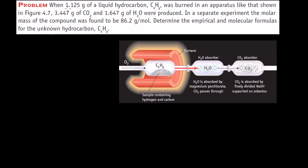Our problem tells us that when 1.125 grams of a liquid hydrocarbon, CxHy — we don't know how many C's and H's there are, so it's a mystery liquid hydrocarbon — was burned in an apparatus like that shown in figure 4-7. This is our mystery hydrocarbon combusting with oxygen. When it burns in this apparatus with oxygen, it tells us that 3.447 grams of carbon dioxide and 1.647 grams of water were produced. So let me write that reaction right there.